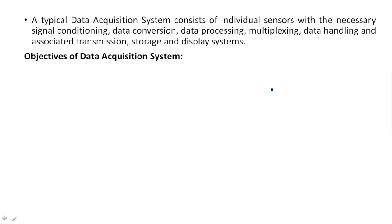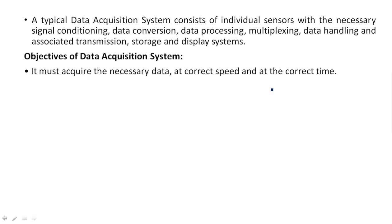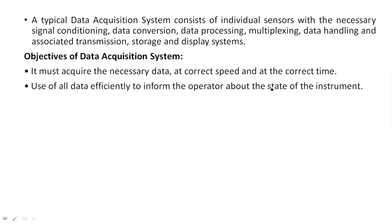Before going to the block diagram, let us see the objectives of the data acquisition system. It must acquire the necessary data at the correct speed and at the correct time. Within the stipulated time, we want to complete the data acquisition of all instruments in an industry. The data acquisition system is used to collect data within that particular stipulated time without any error.